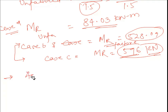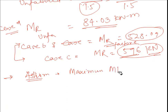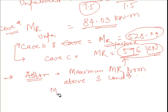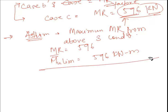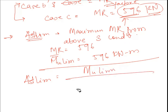Next, we find Ast limiting. For Ast limiting, we use the maximum moment of resistance from the above three conditions. The maximum value is MR = 596 kN·m, which we call Mu,lim. So Mu,lim = 596 kN·m. The formula for Ast limiting uses this Mu,lim value.